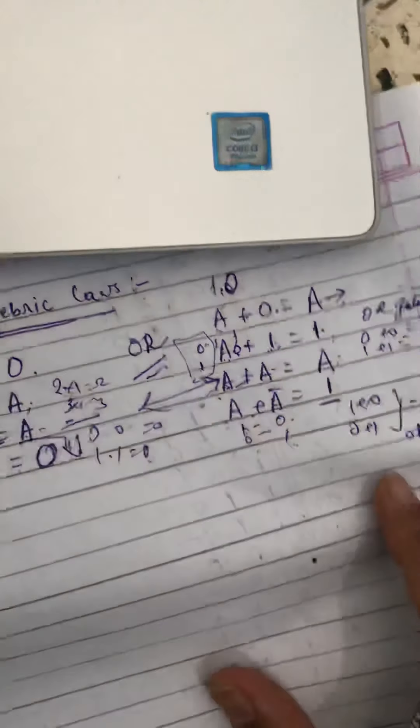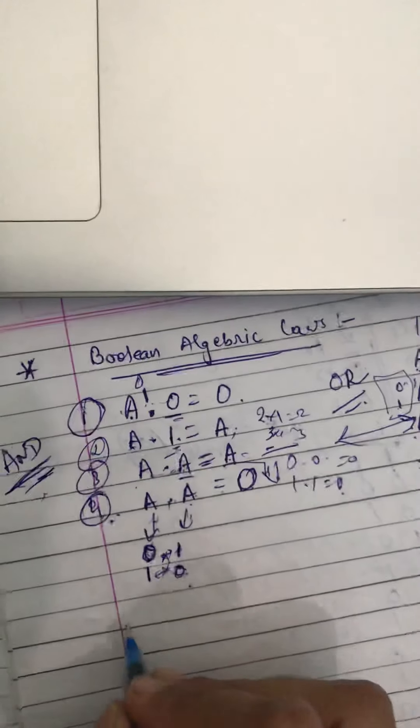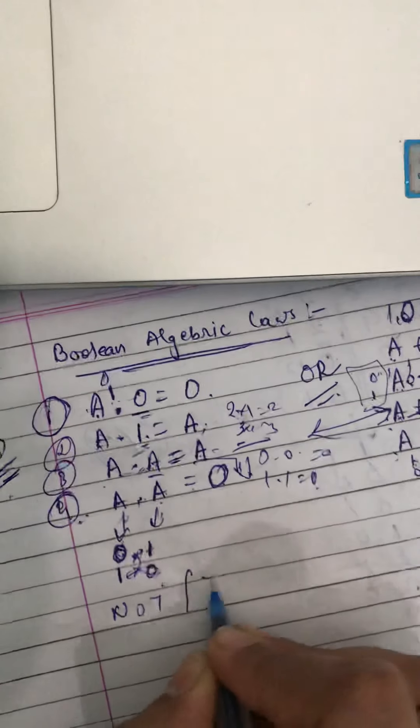So these are basically AND and OR laws. Next is NOT or inverse law.